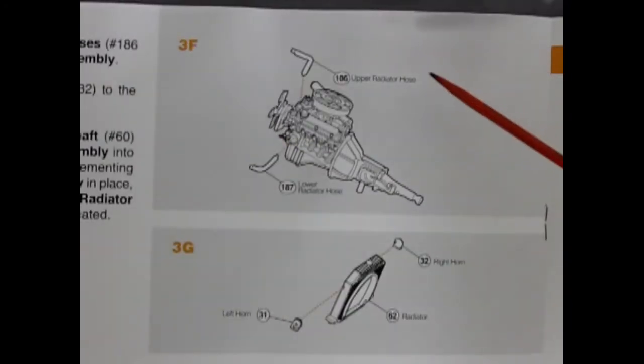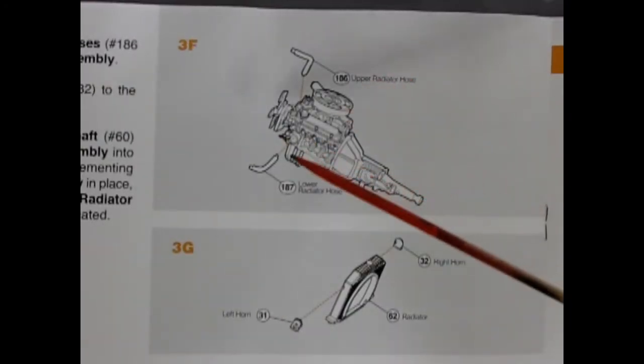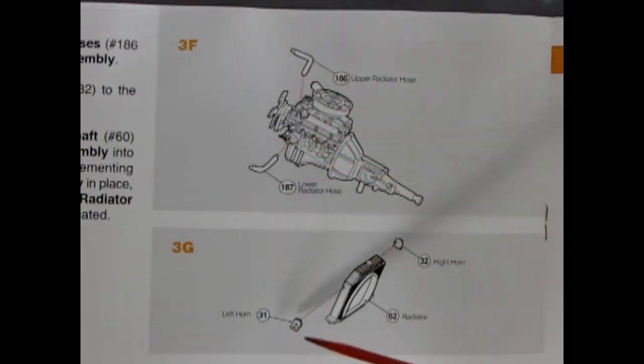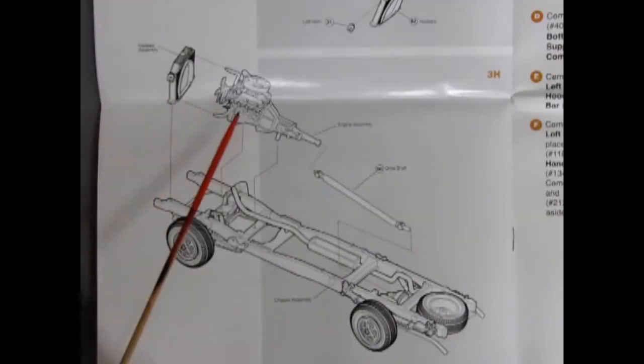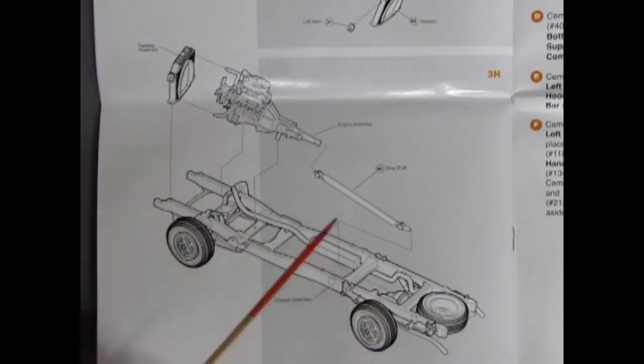What engine wouldn't be complete without the upper radiator hose and lower radiator hose, and down here we get to glue our horns onto our radiator. The radiator, the completed engine, and the drive shaft all hook up along the frame into the rear differential to complete the unit.